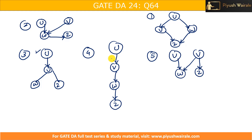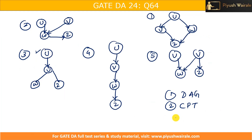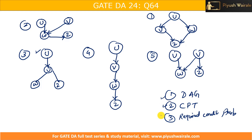So what can they change in Bayesian network questions? They can change the DAG — the directed acyclic graph. They can change the CPT tables. They can also change the required condition — the required conditional probability. So they can change the question, the CPT, or the graph. Only these varieties are possible.